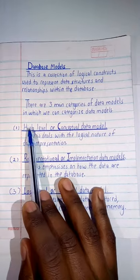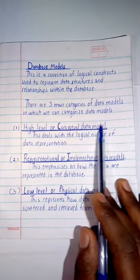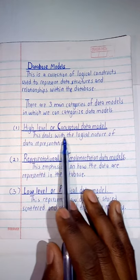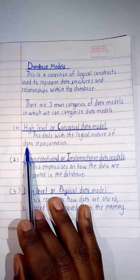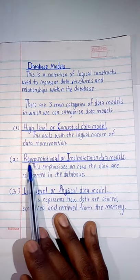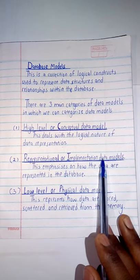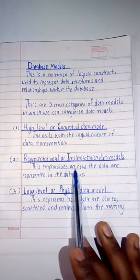These are the three categories: we are having the high level or conceptual data model - with this, this deals with the logical nature of the data representation. Then we are having the representational or implementation data models - this emphasizes on how the data are represented in the database.